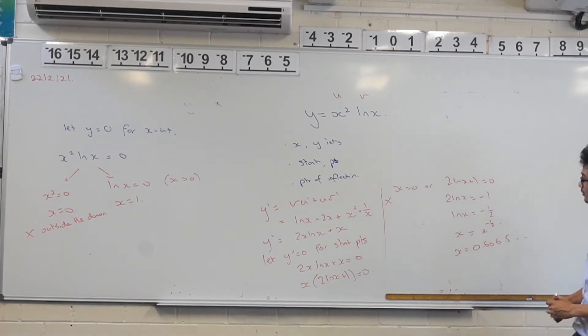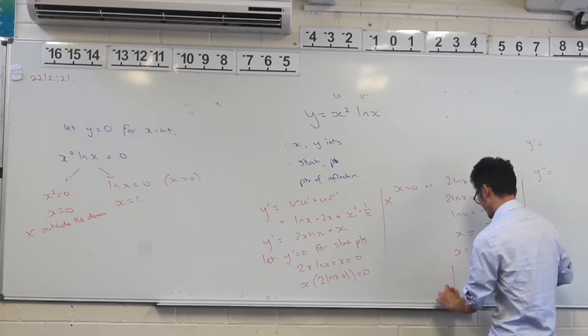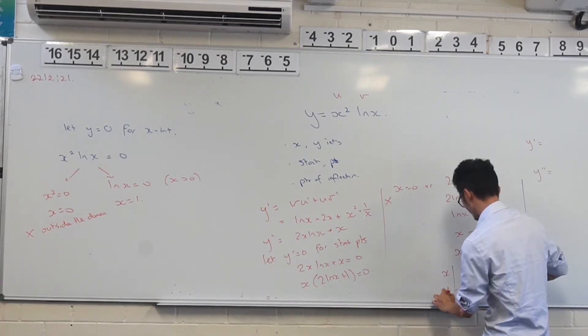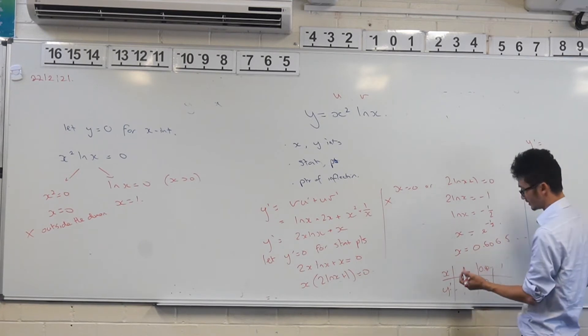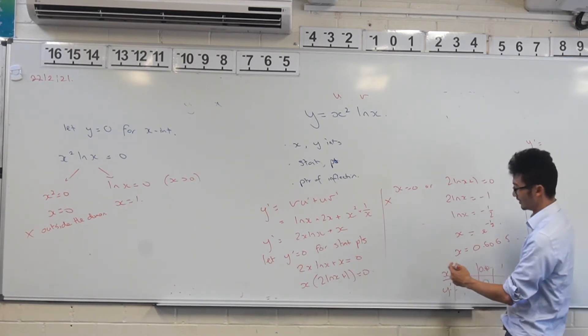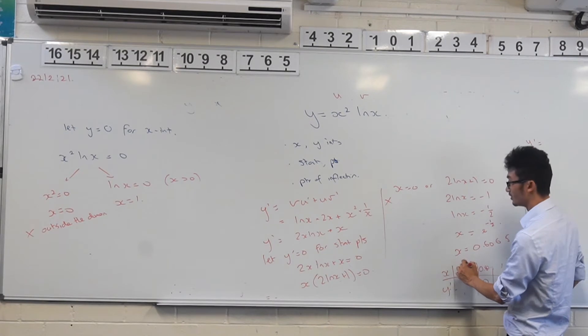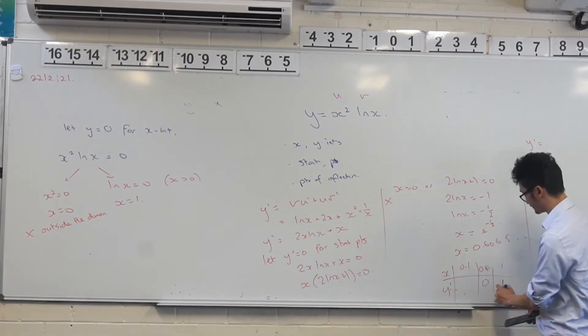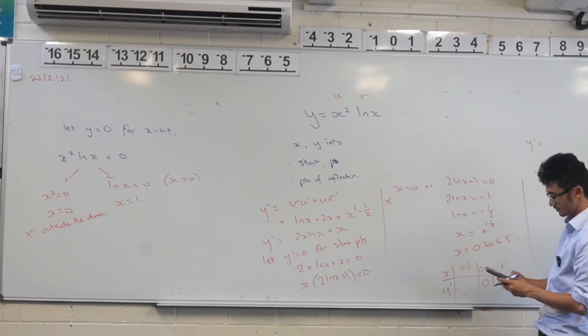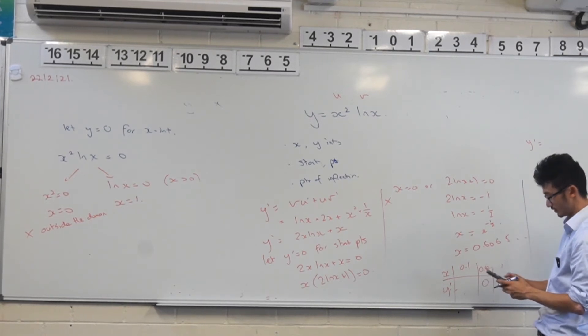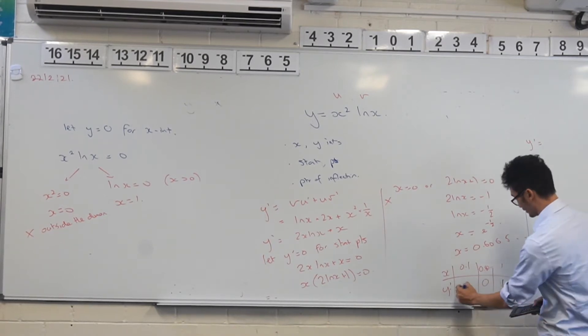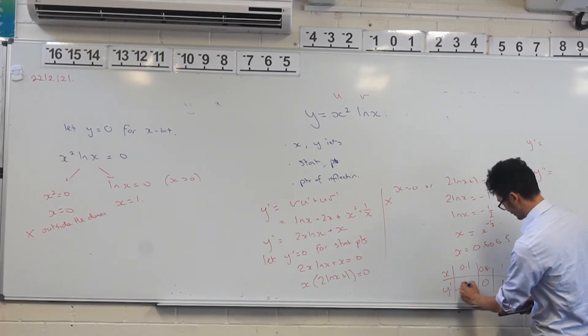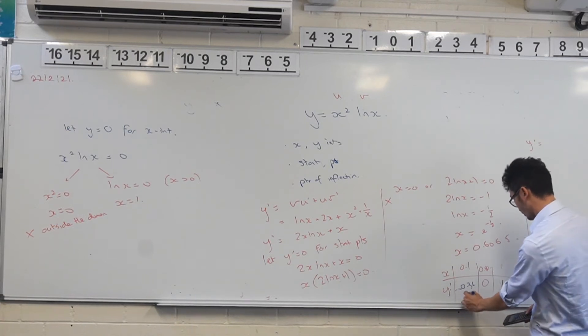Alright. So that's our stationary points. So I'll just test that really quickly. So x, y dash 0.6, 0. That's zero. I'll just test one. And I can't test zero, funnily enough, because that's not defined. But I can test 0.1 maybe. Let's try that for one. So here's 2 times 0.1 times ln of 0.1 plus 0.1. Yep. Negative 0.36.